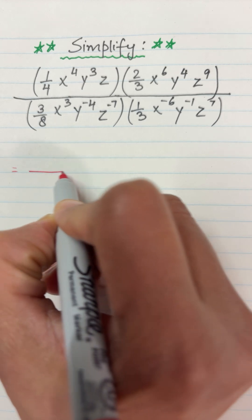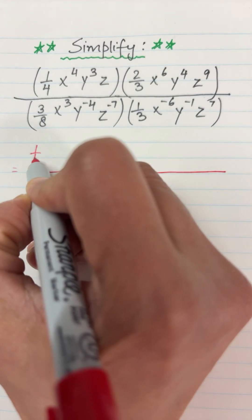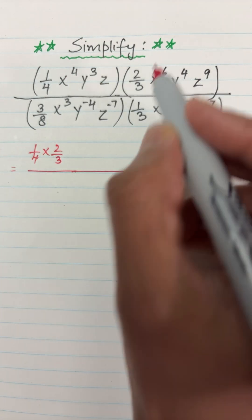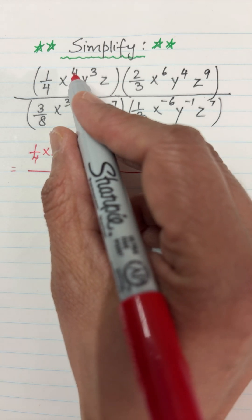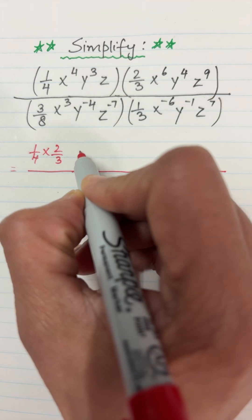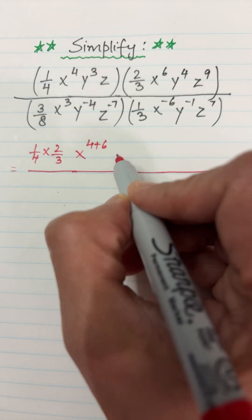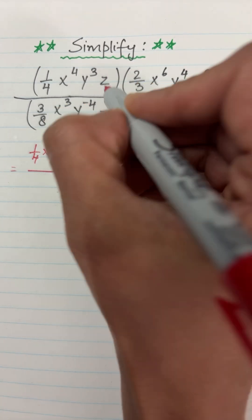Let's solve the numerator first. In the numerator part, I will multiply one-fourth times two-thirds. x^4 is being multiplied by x^6. Their bases are the same and they are being multiplied, so by the laws of exponents, the exponents will get added: x^(4+6), y^(3+4). Again, the exponents will be added.